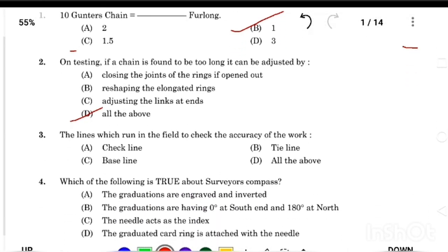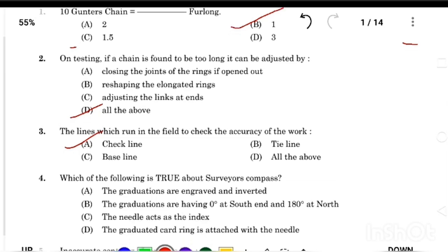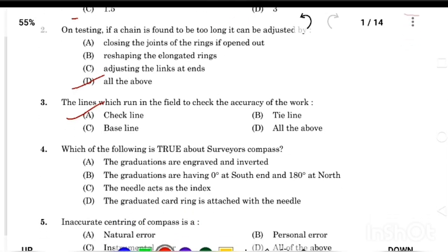The lines which run in the field to check the accuracy of the work, Answer Option A, Check line. Which of the following is true about Surveyor Compass, Answer Option C, the needle acts as the index.